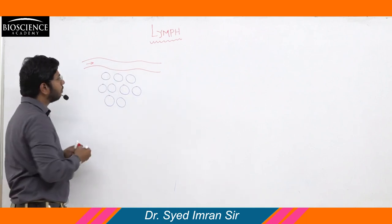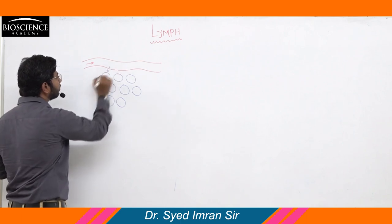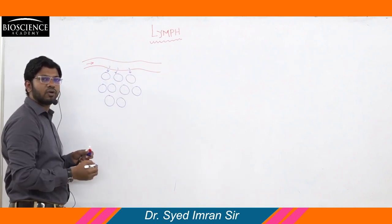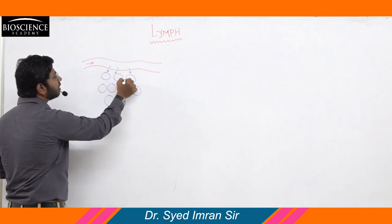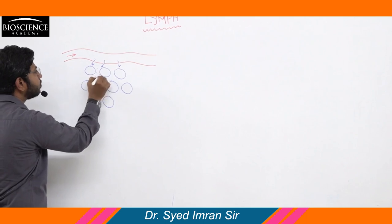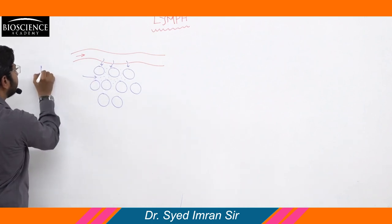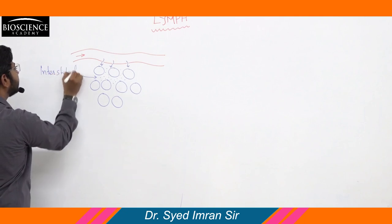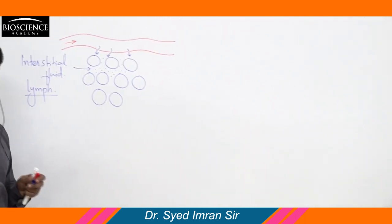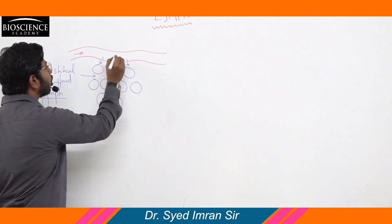From the blood capillary, fluid starts coming out into the intercellular spaces. The fluid that accumulates in the intercellular spaces is called interstitial fluid, and this same interstitial fluid is also called lymph.